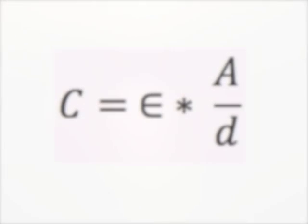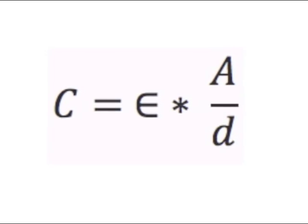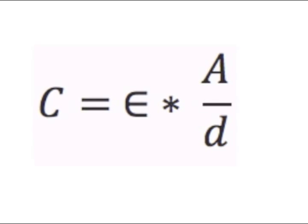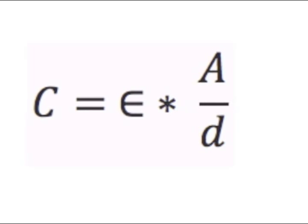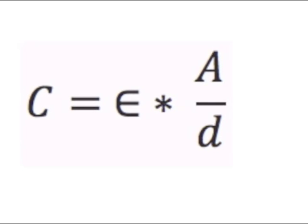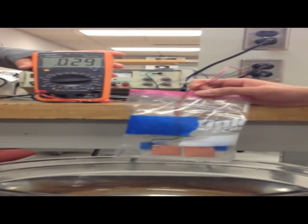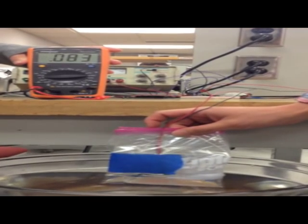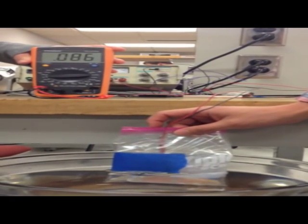The equation capacitance equals epsilon times the area over the distance between the plates was used to find the capacitance of the capacitor. Epsilon is a constant determined by the substance between the plates. The value of epsilon of water is 80 times bigger than the value of epsilon of air. Therefore the capacitance of the plates in water is bigger than the capacitance of the plates in air.